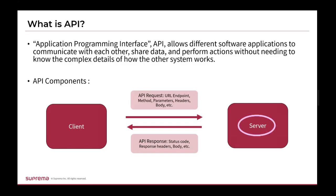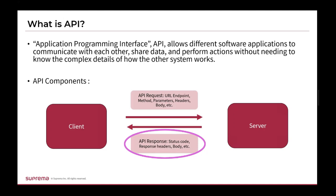Then we have the server, which receives and processes this request. The server is responsible for handling authentication, validating input data, retrieving or manipulating data from a database, and returning the appropriate response to the client. After the client processes the request, it sends back an API response. An API response typically includes a status code indicating the success or failure of the request, response headers which are metadata about the response, and the body which includes the actual data or information that was requested.